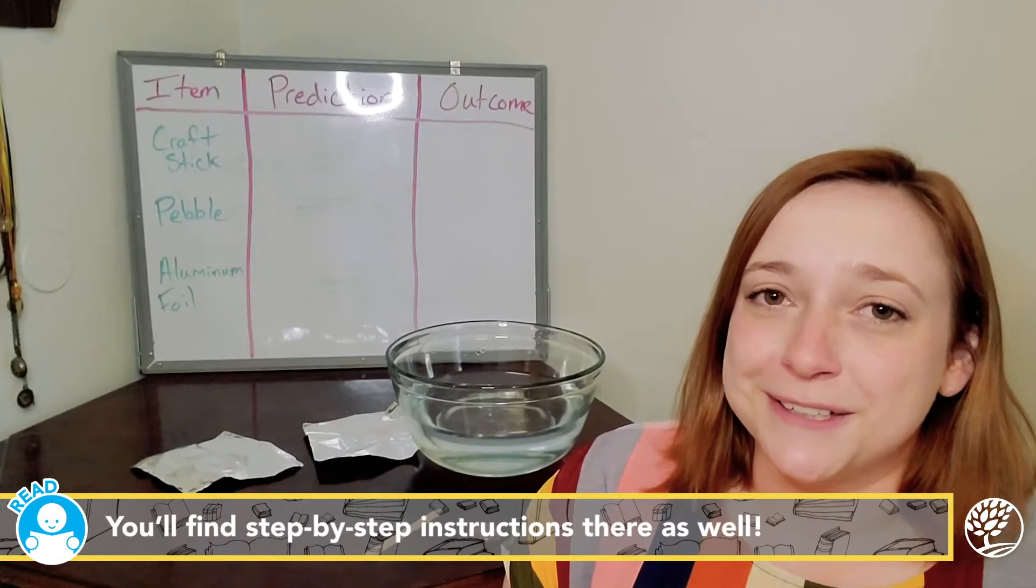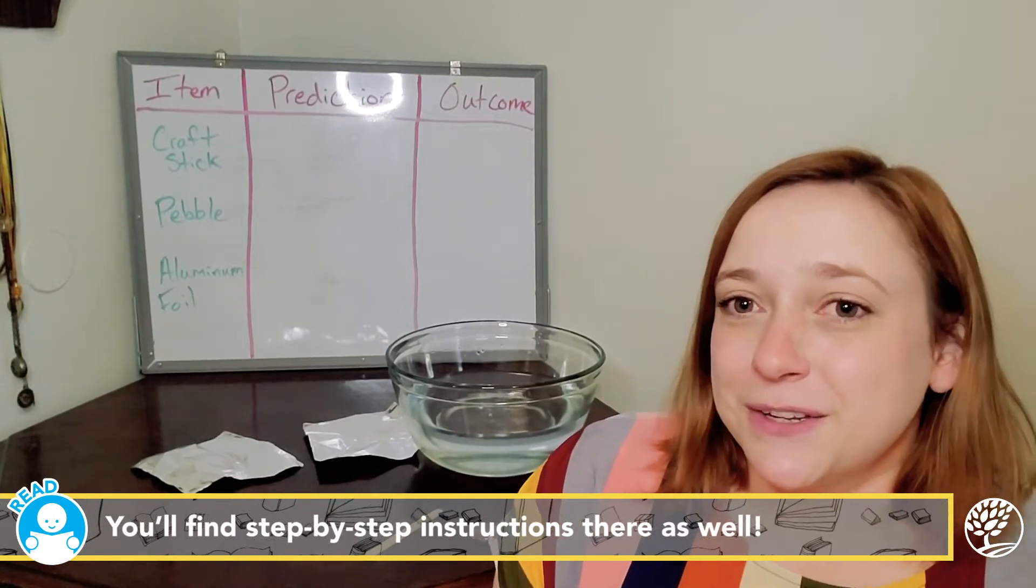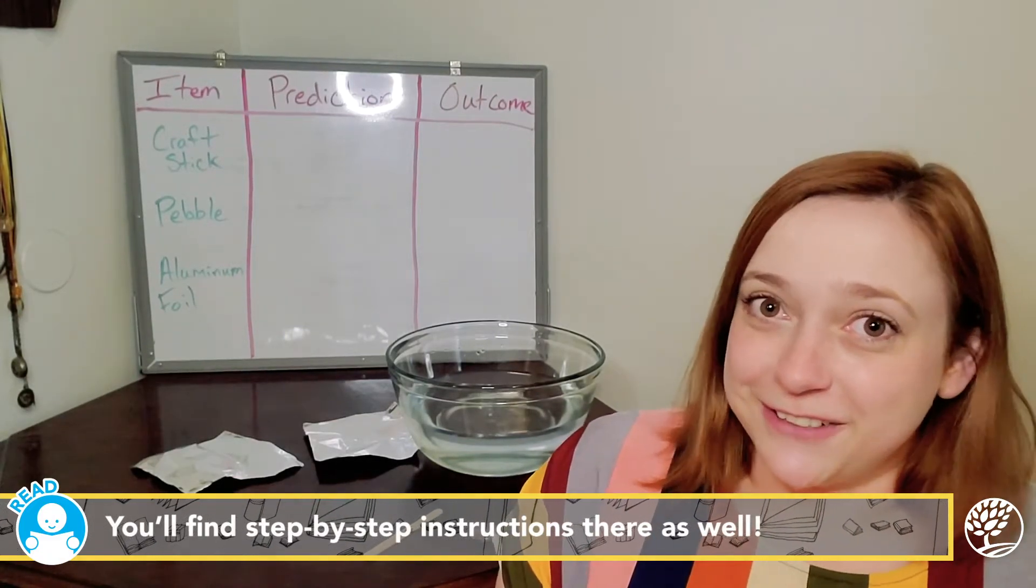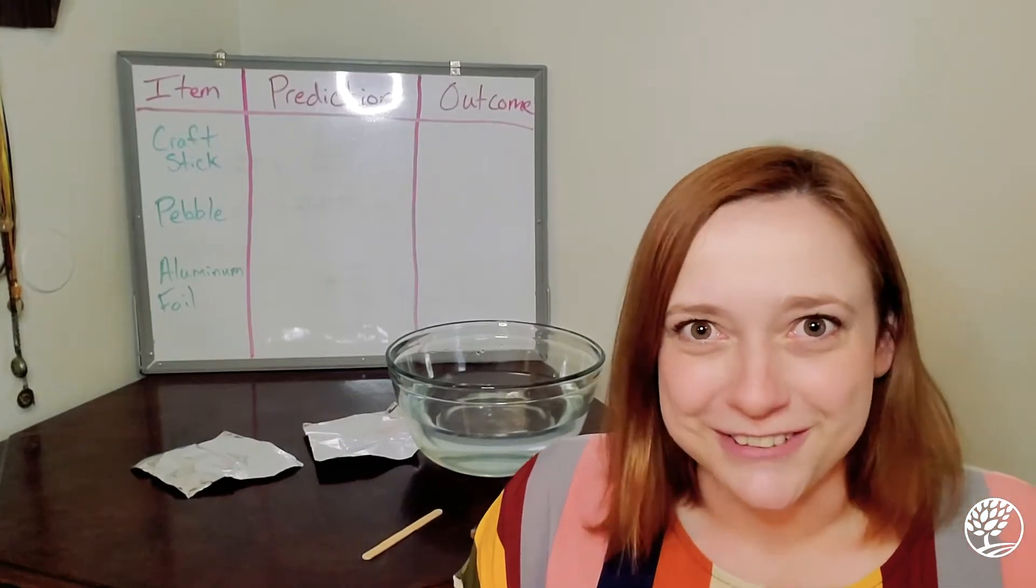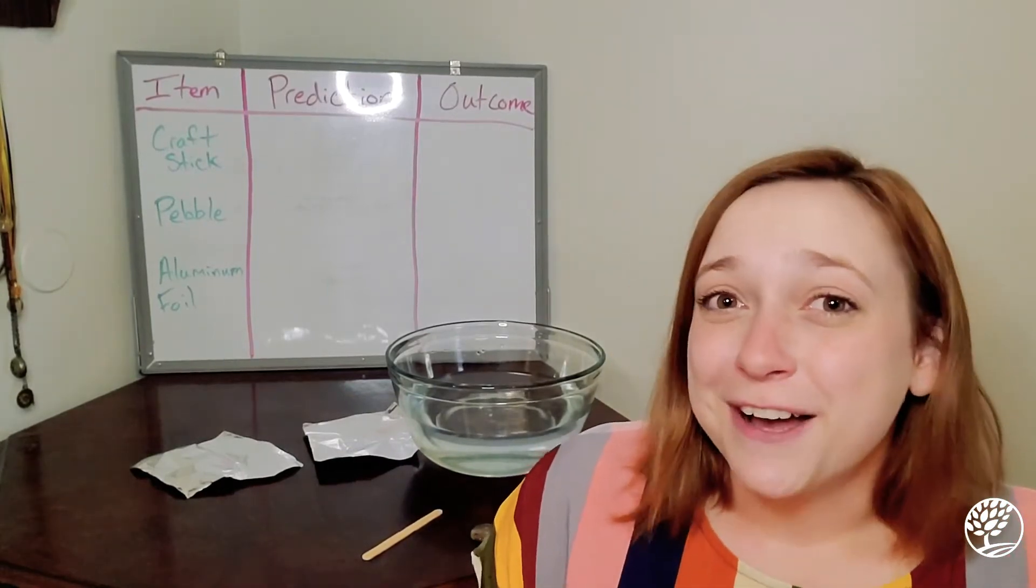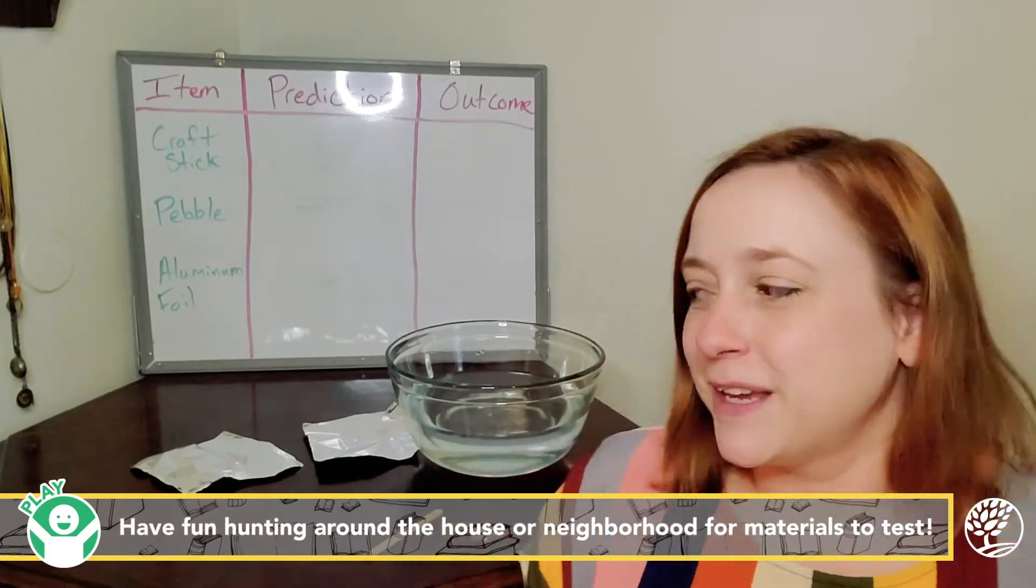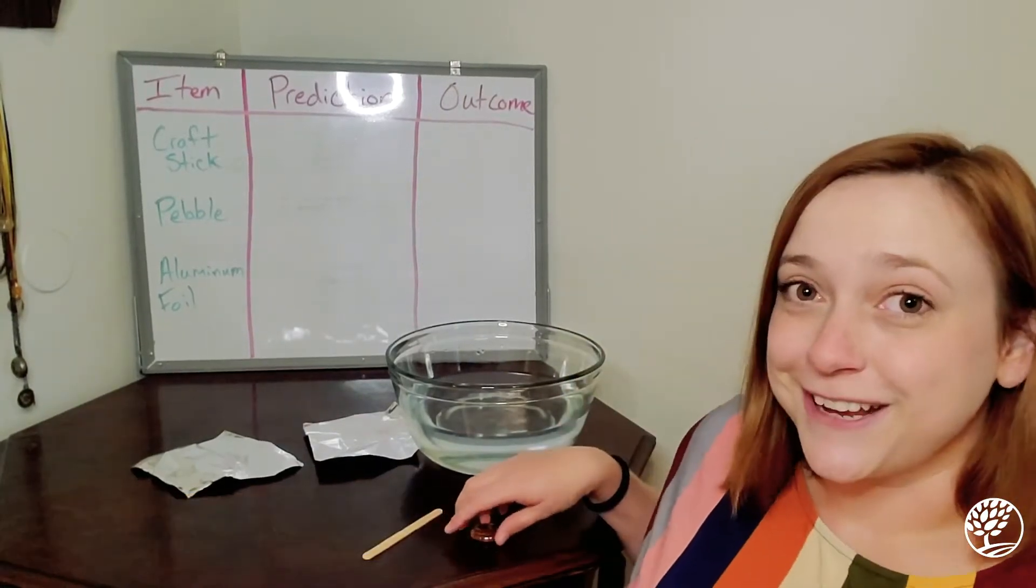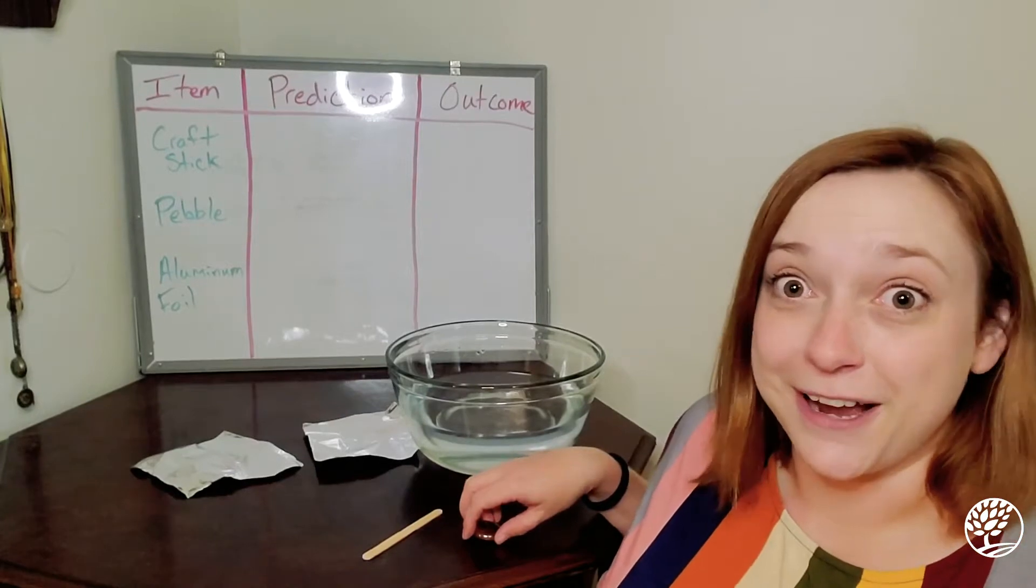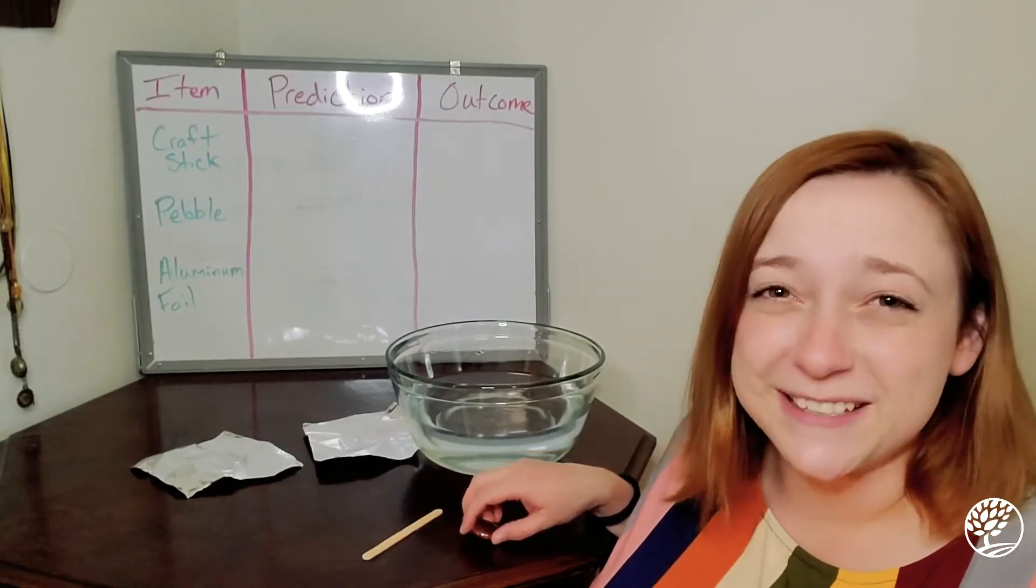So the first thing that you guys need to do is go on a scavenger hunt around the house and find some objects that you want to test out and see if they will sink or float. You can also go out into nature and find other objects there too, so sticks, pebbles, leaves, all sorts of things.